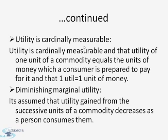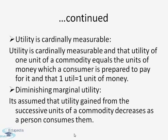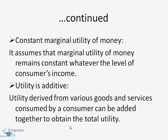The next assumption is that utility is cardinally measurable. The cardinalists assume that utility is measurable and that the utility of one unit of a commodity equals the unit of money a consumer is prepared to pay for it, with one util equaling one unit of money. The next assumption is that the law of diminishing marginal utility applies — utility gained from successive units of a commodity decreases as a person consumes them.